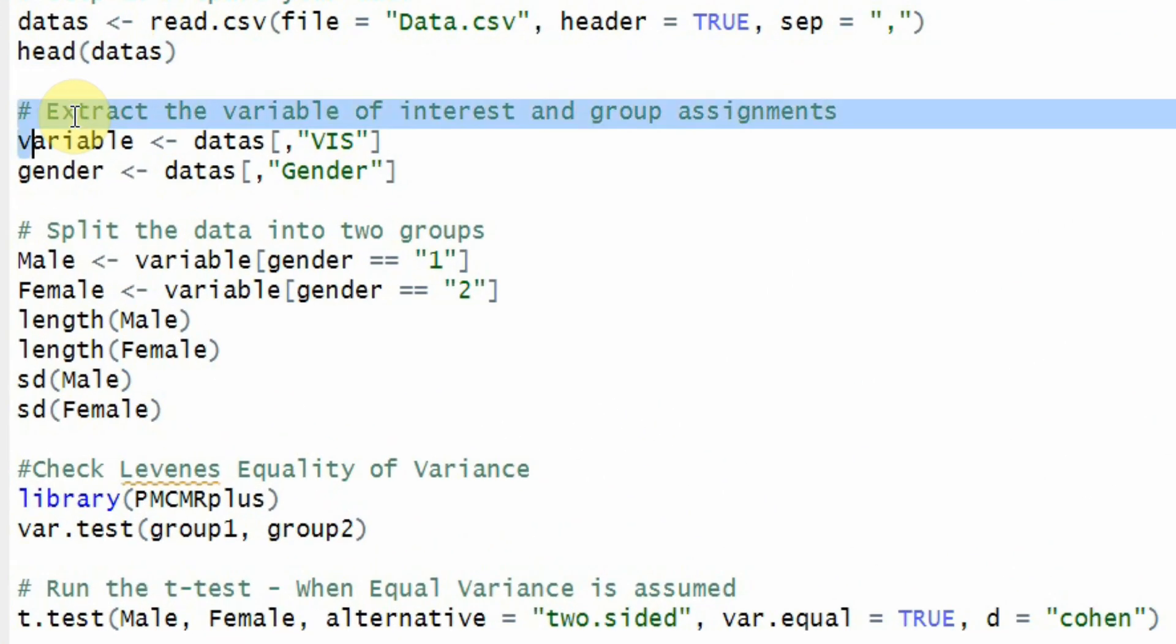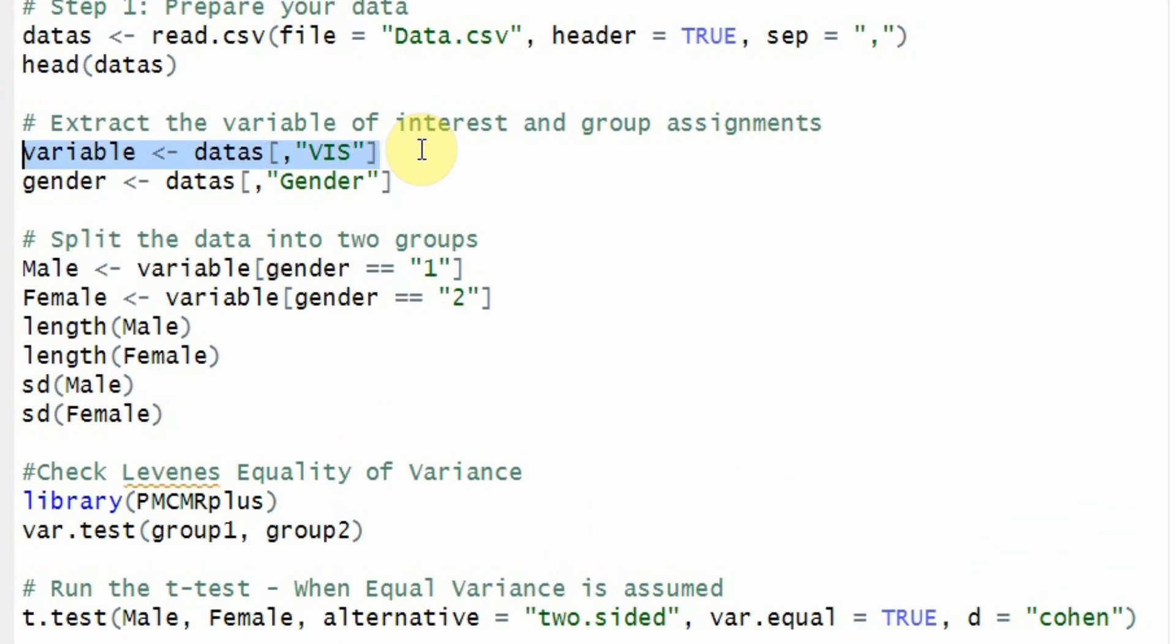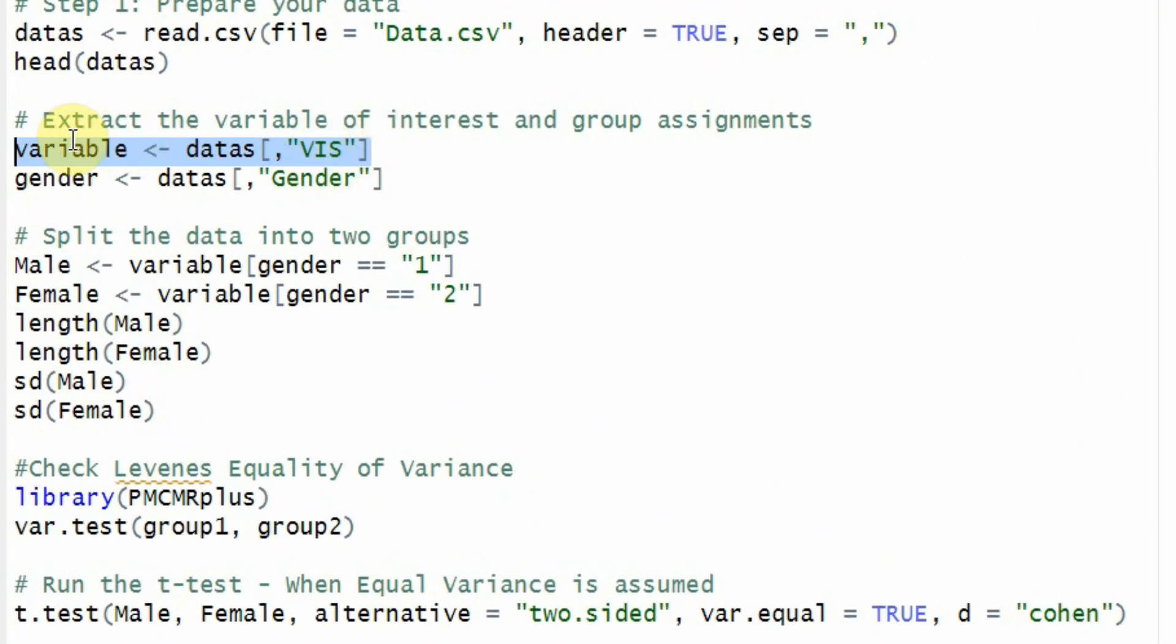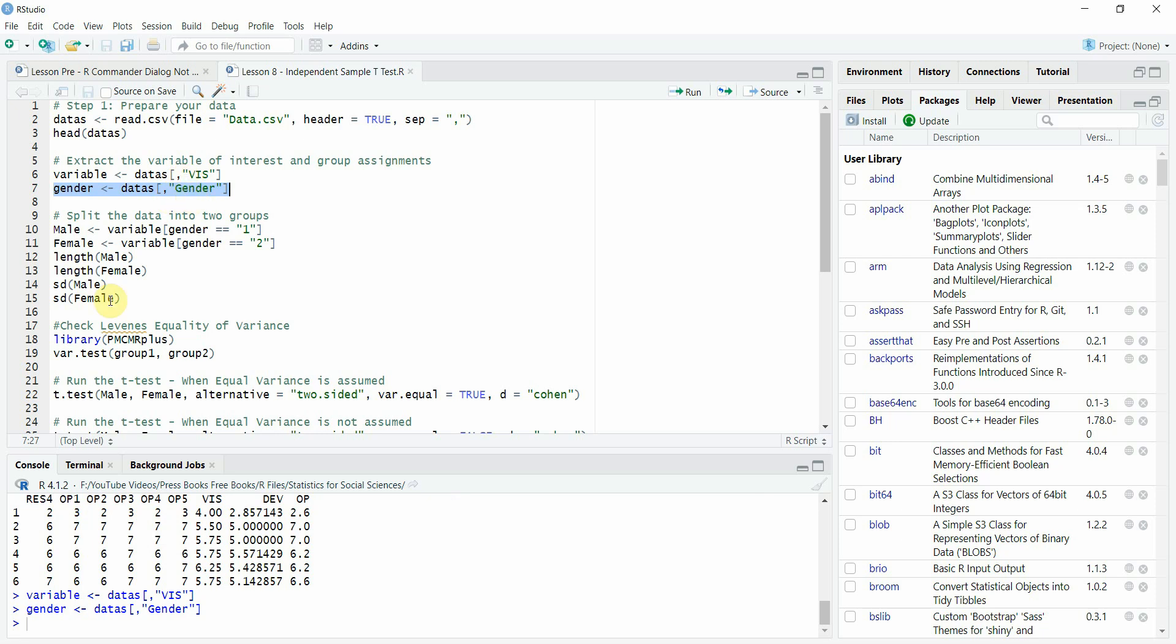Now the next step, extract the variable of interest and group assignments. What is my dependent variable? I've got this variable here and I'm going to read my variable from my data frame. Data S because this holds my data set that I read from the CSV file, square bracket comma, the variable name in the data set. It is vision, just like one mentioned here, then close the square bracket, select it, run it. Now your vision variable is assigned to this particular object. Now let's have a grouping variable similarly. And that is our gender variable. All good.